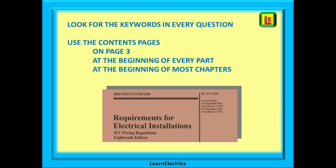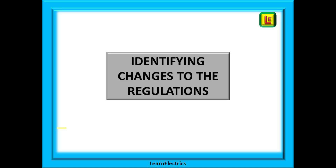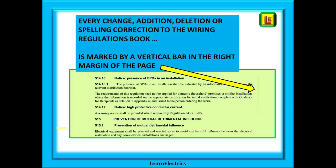This is just like using an A to Z street atlas to find a road in some far-off town. How do we identify where there have been changes? Every change, addition, deletion or spelling correction to the wiring regulations book is marked by a vertical bar in the right margin of the page. It may be just one line, one paragraph or even the whole page. This bar indicates a change from the last book, and these changes are often focused on by exam question setters, who want to know if you are up to speed on the new regulations.